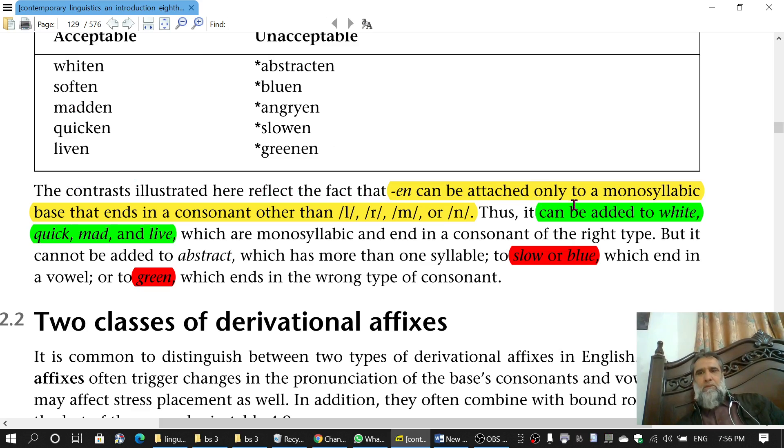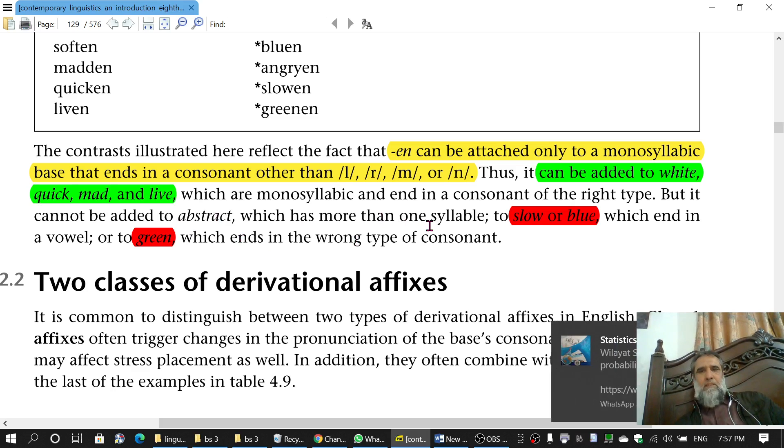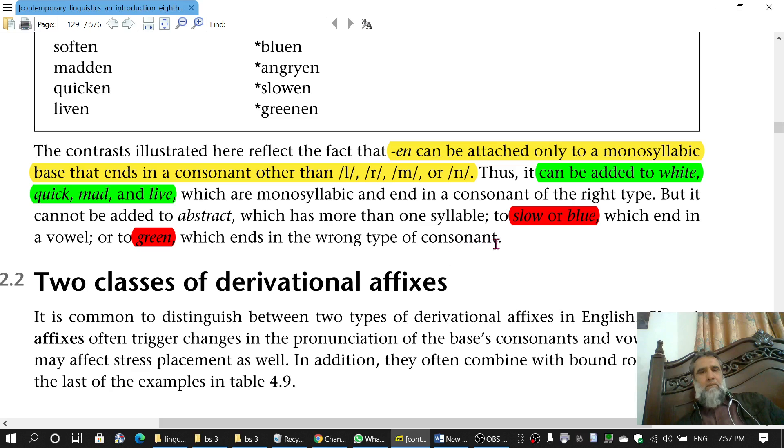Thus it can be added to white, quick, mad and live which are monosyllabic and end in a consonant of the right type. But it cannot be added to abstract which has more than one syllable, to slow or blue which end in a vowel, or to green which ends in the wrong type of consonant. Green ends in n and we said n should not be there.